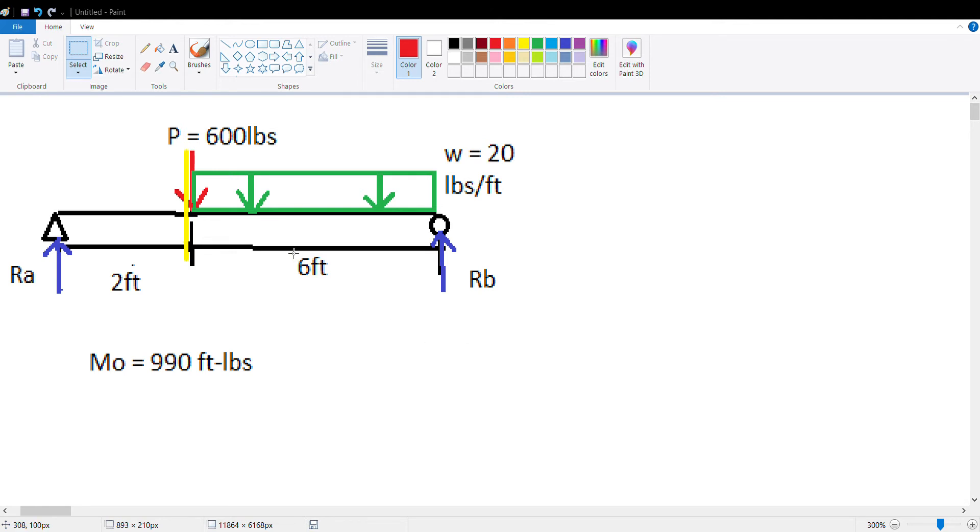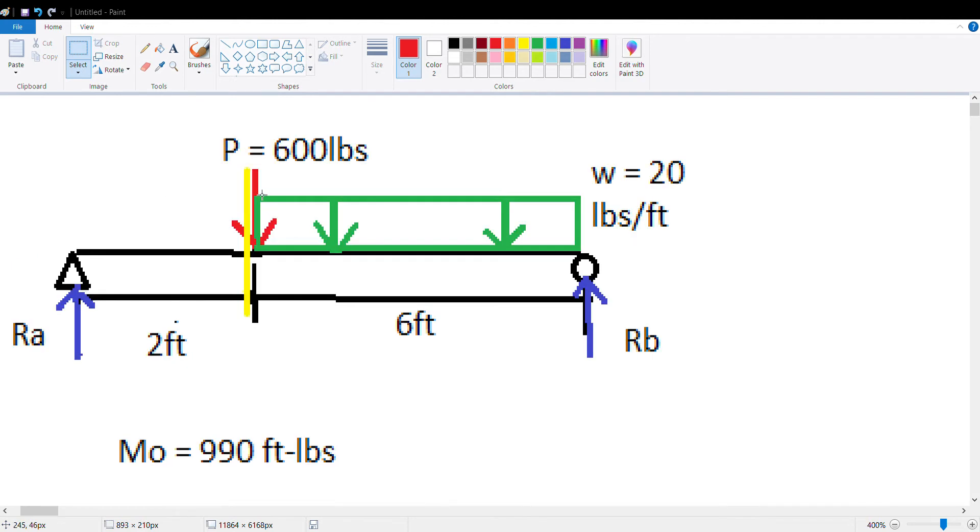Now the last video we determined the maximum moment of this beam with this given loading scenario, and how we solved it was I just took a section cut at that yellow point, analyzed everything to the left. So I just had to solve for this reaction and I was able to get the beam. Watch my other video if you have no idea what I'm talking about.